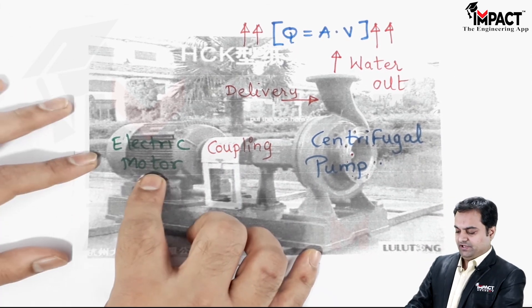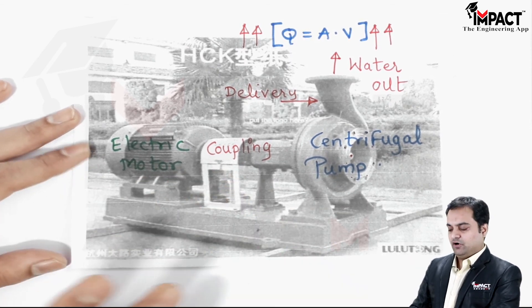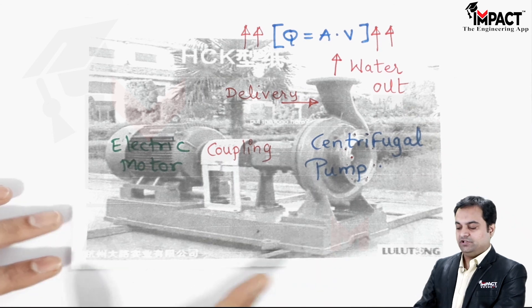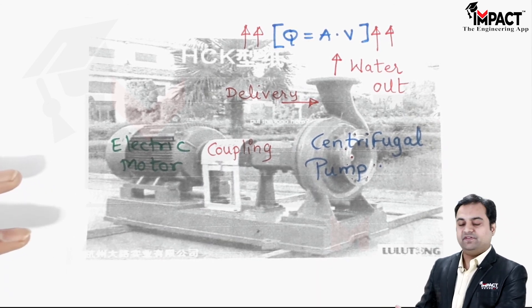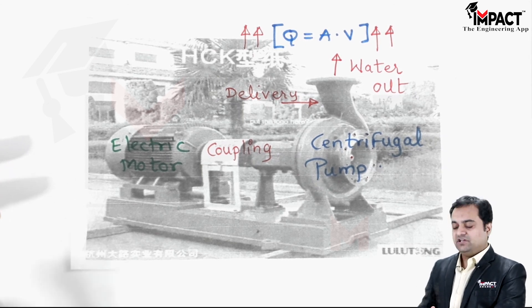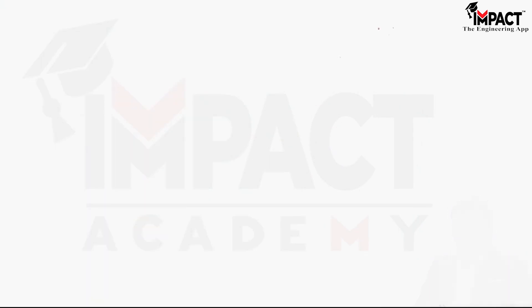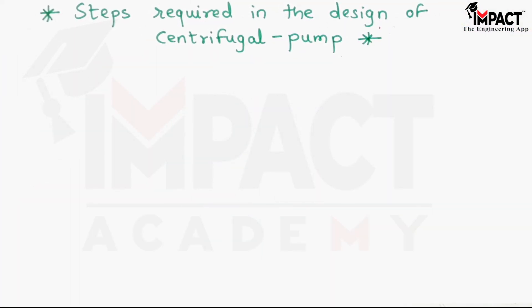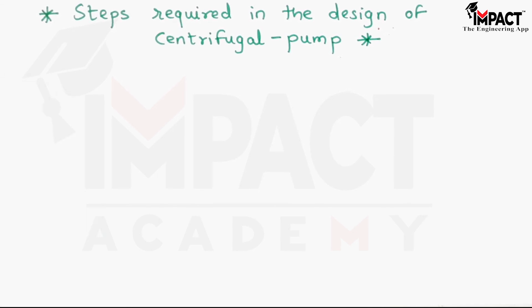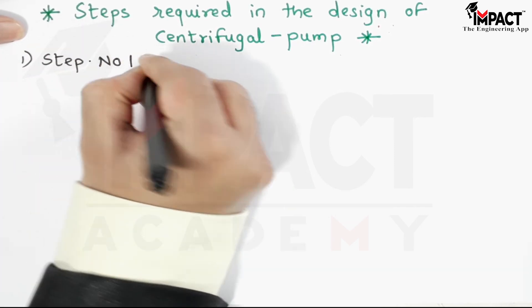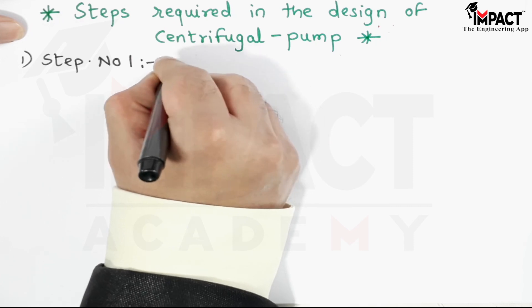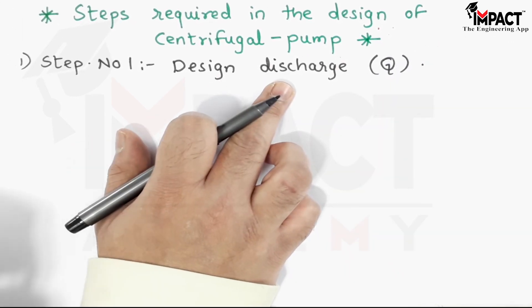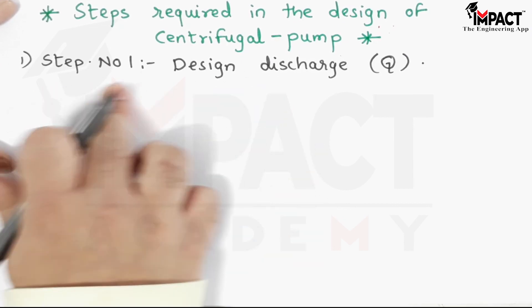That was a short description of the centrifugal pump connected to the electric motor directly via coupling. Now I'll give you all the steps required for the design of the centrifugal pump so that problems become simple. There are seven steps. Step one is the design discharge, denoted by Q — whatever discharge is given in the problem, we modify it in this step.